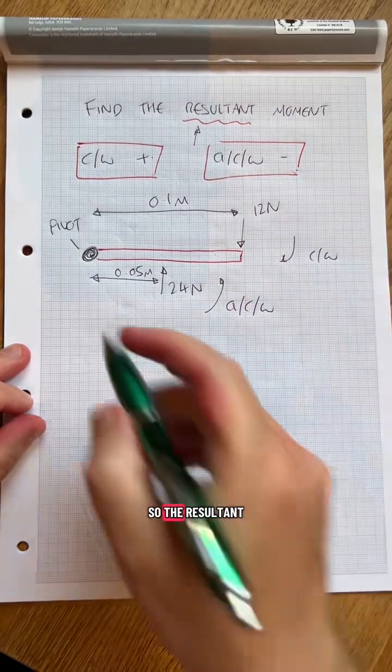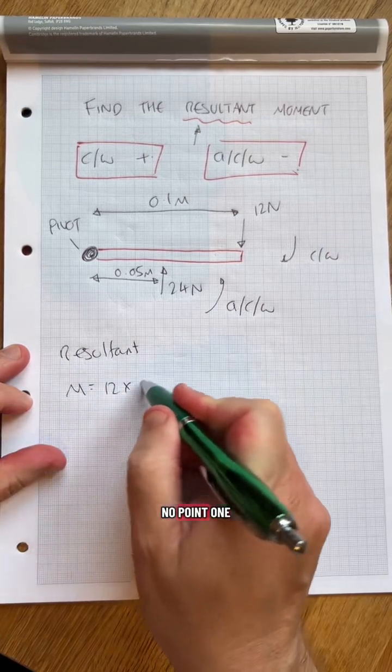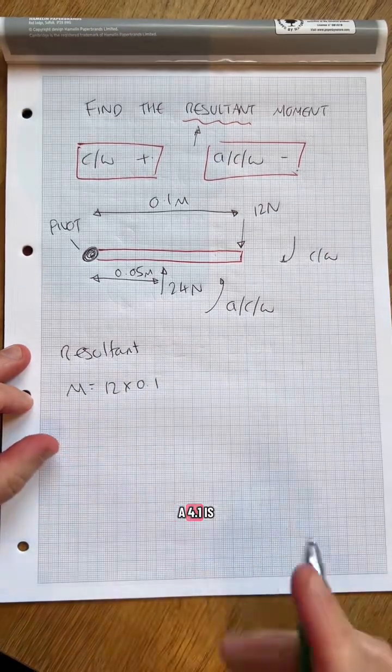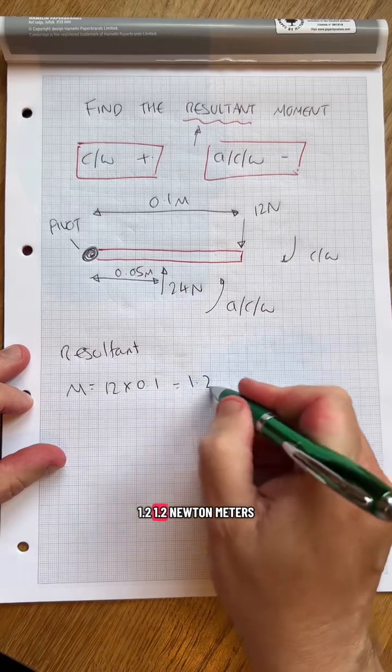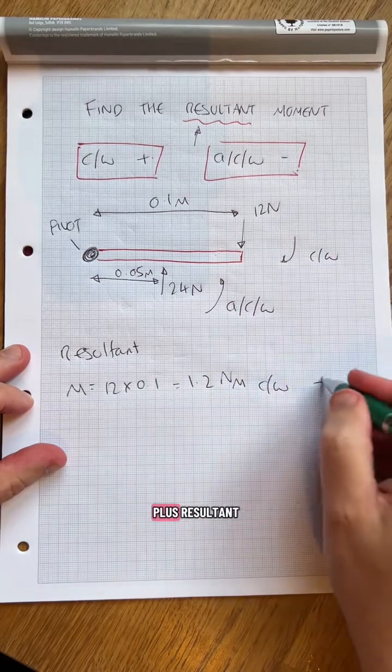The result is the moment here is going to be 12 times 0.1. 12 times by 0.1 is 1.2 newton meters. That's going clockwise, plus.